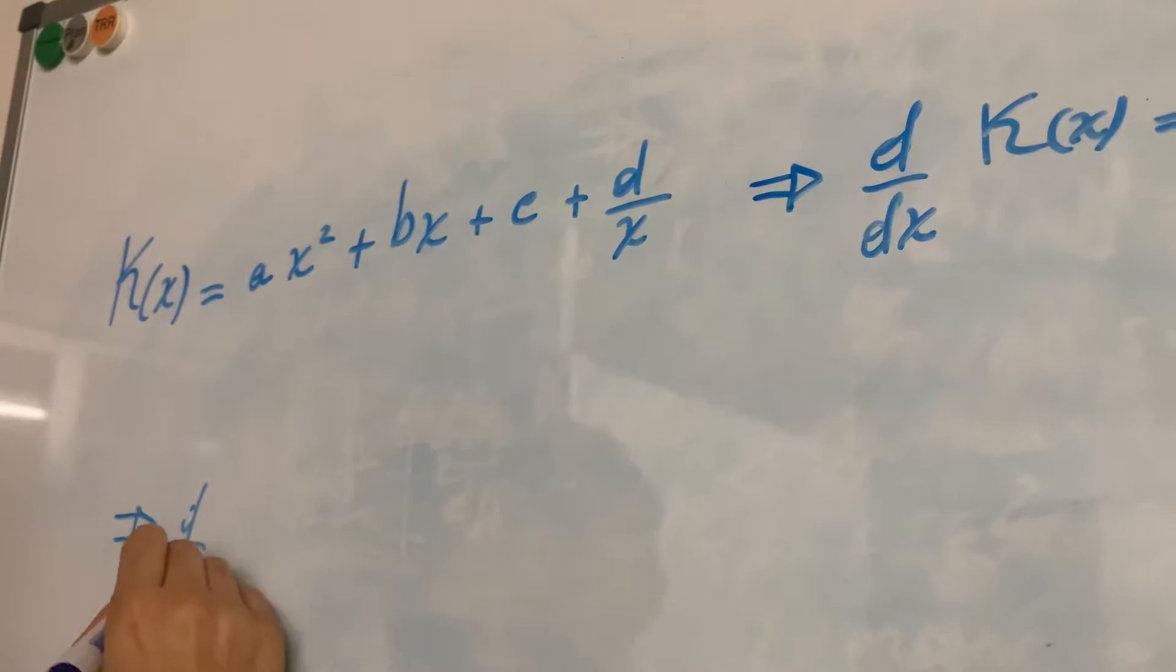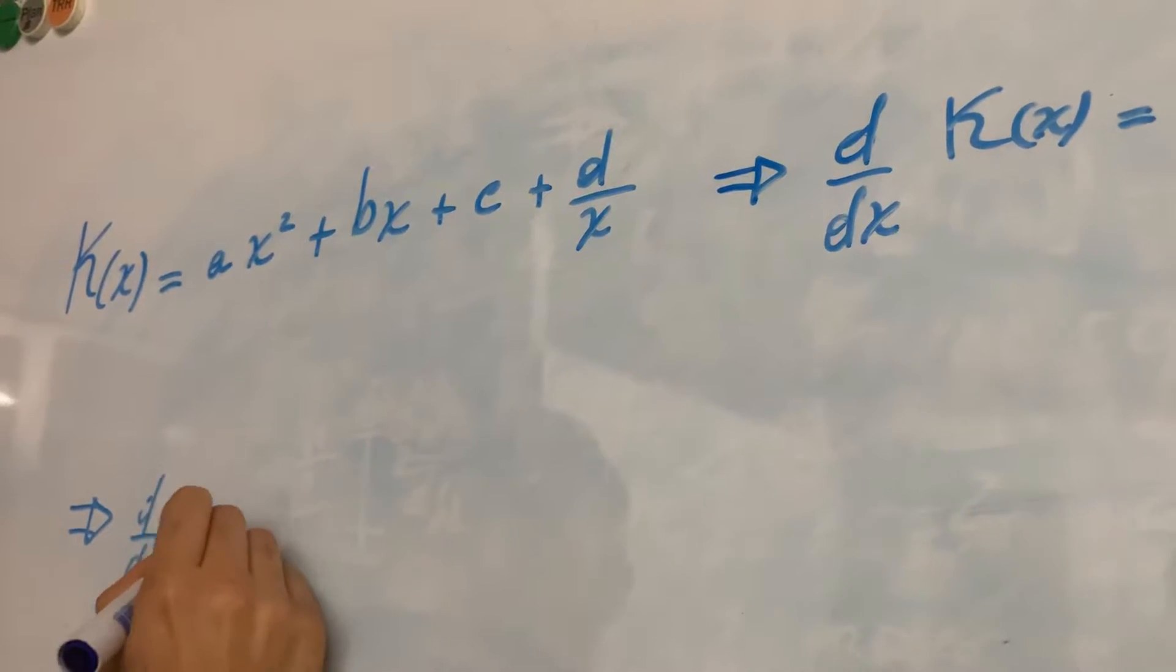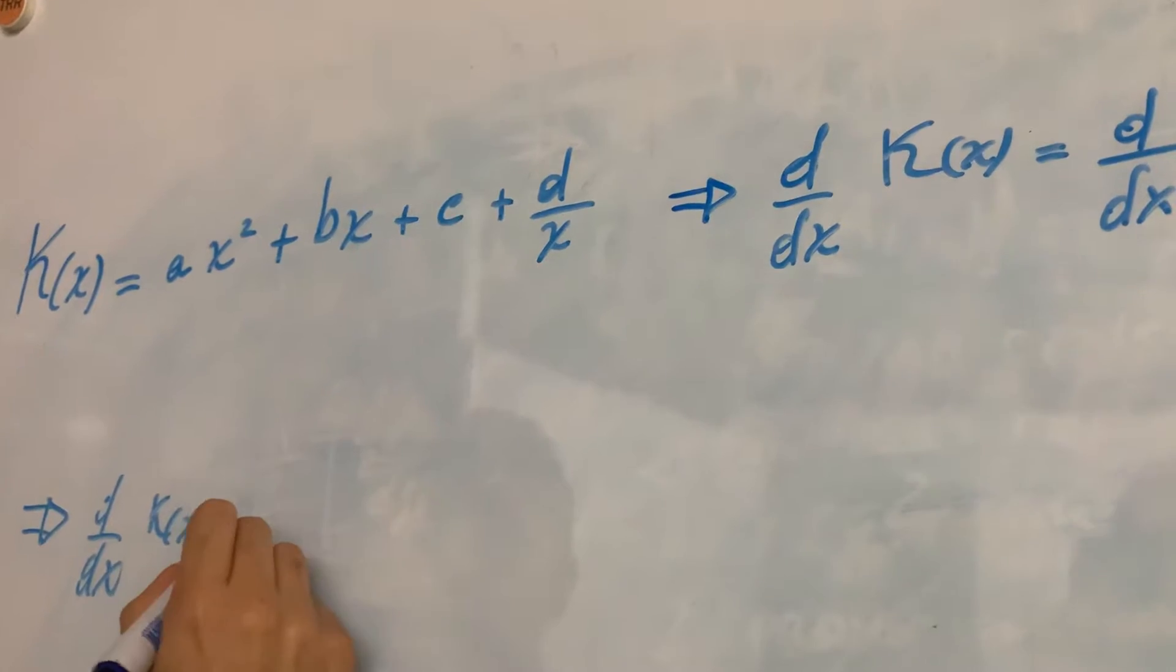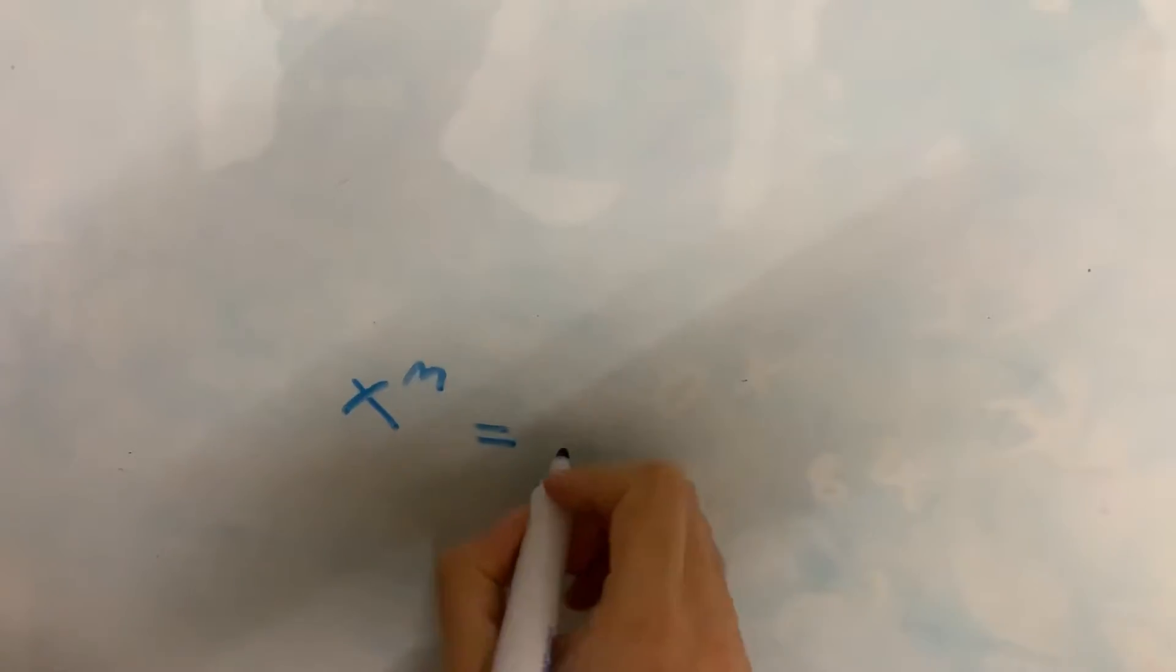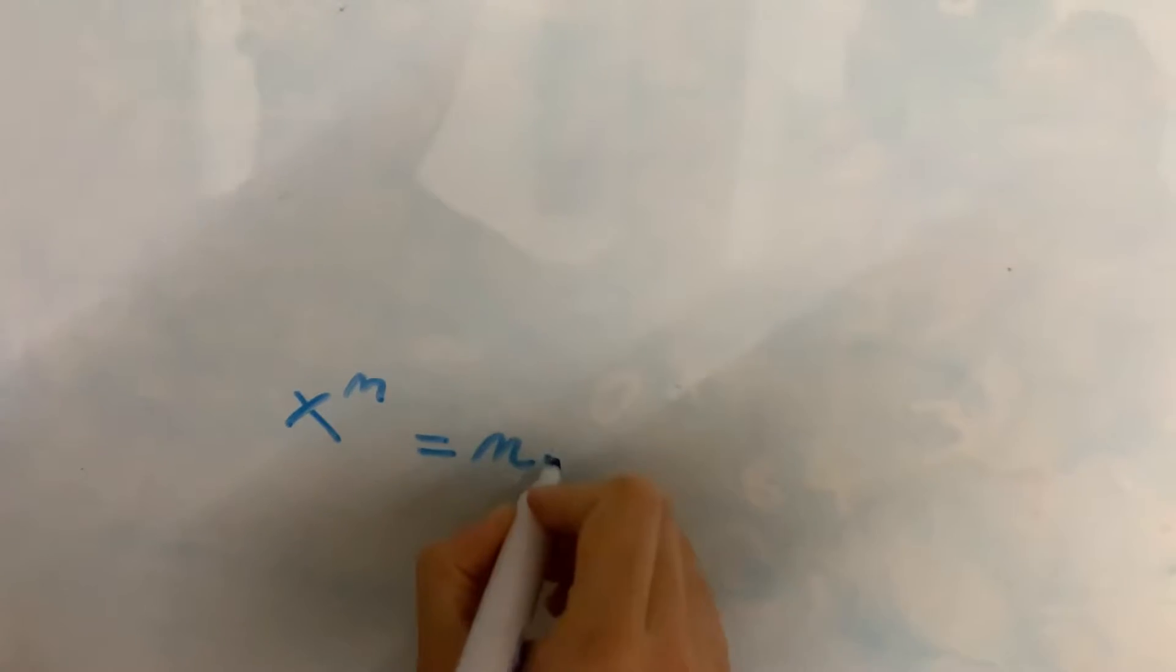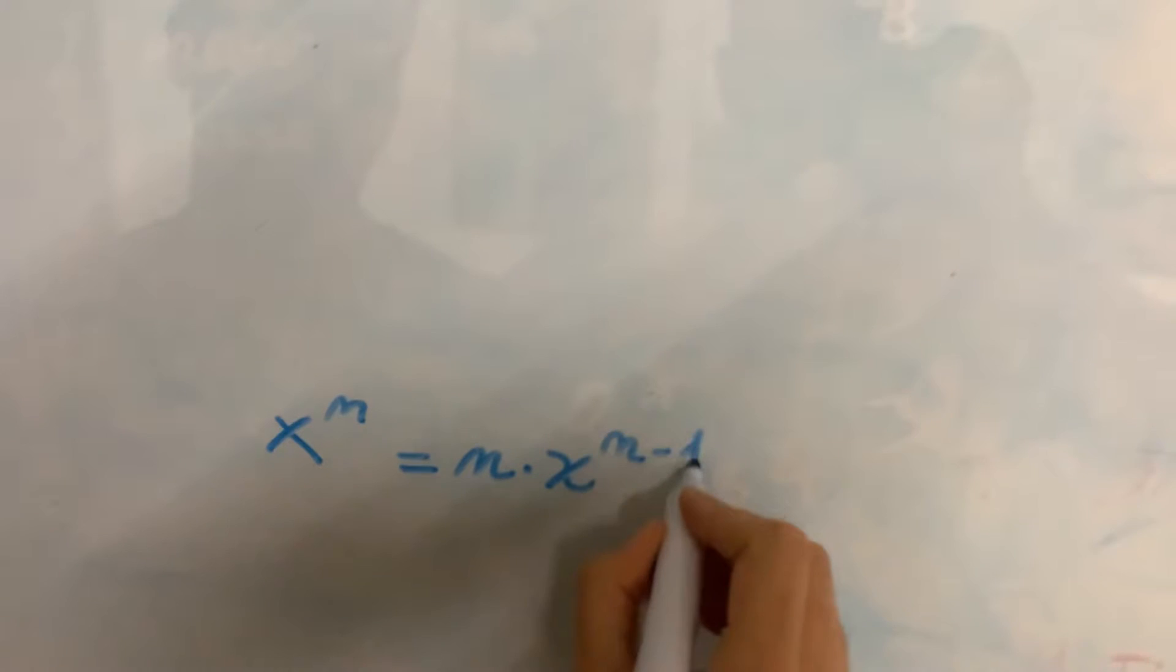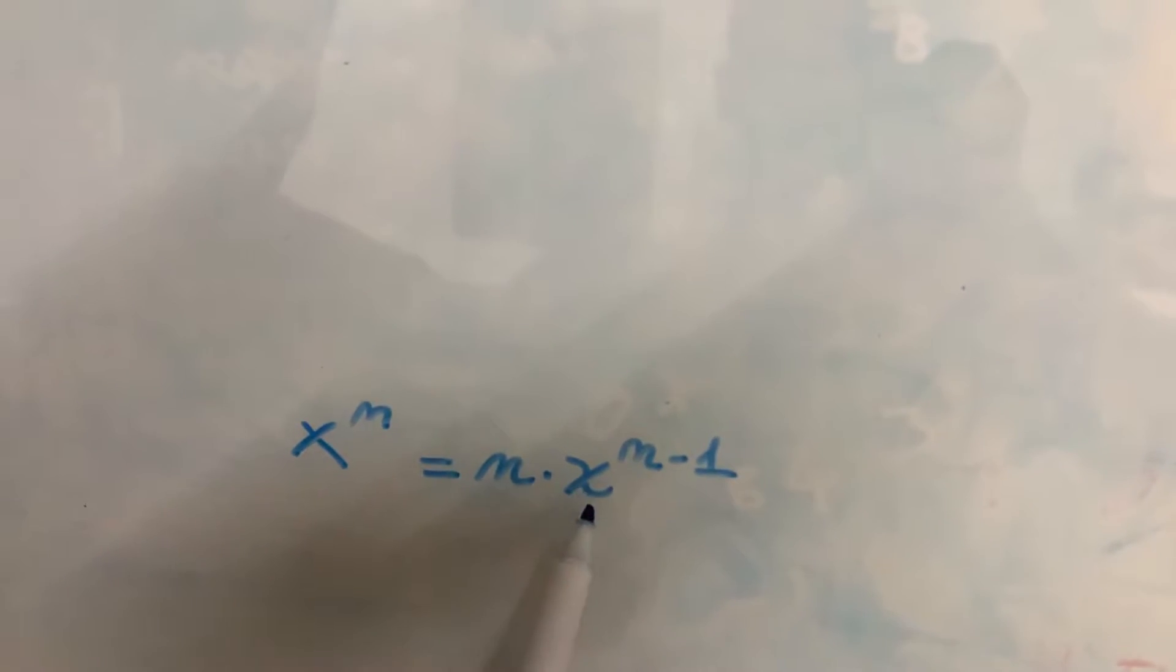The derivative of x squared is equal to the first derivative. Now we have a second rule which is when we have x to the power of n, the derivative is going to be n times x to the power of n minus 1. So the derivative is lowering the power of x by 1.